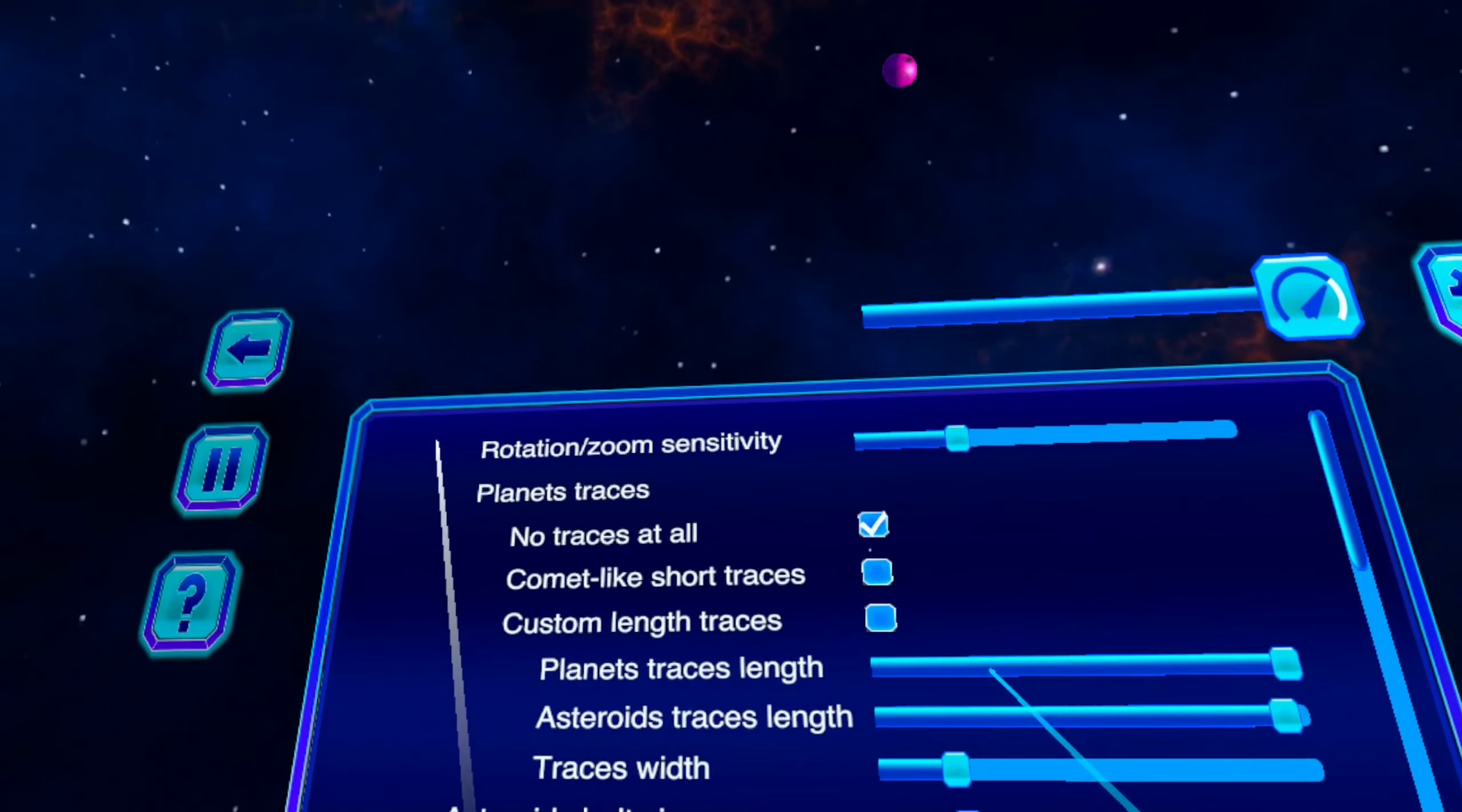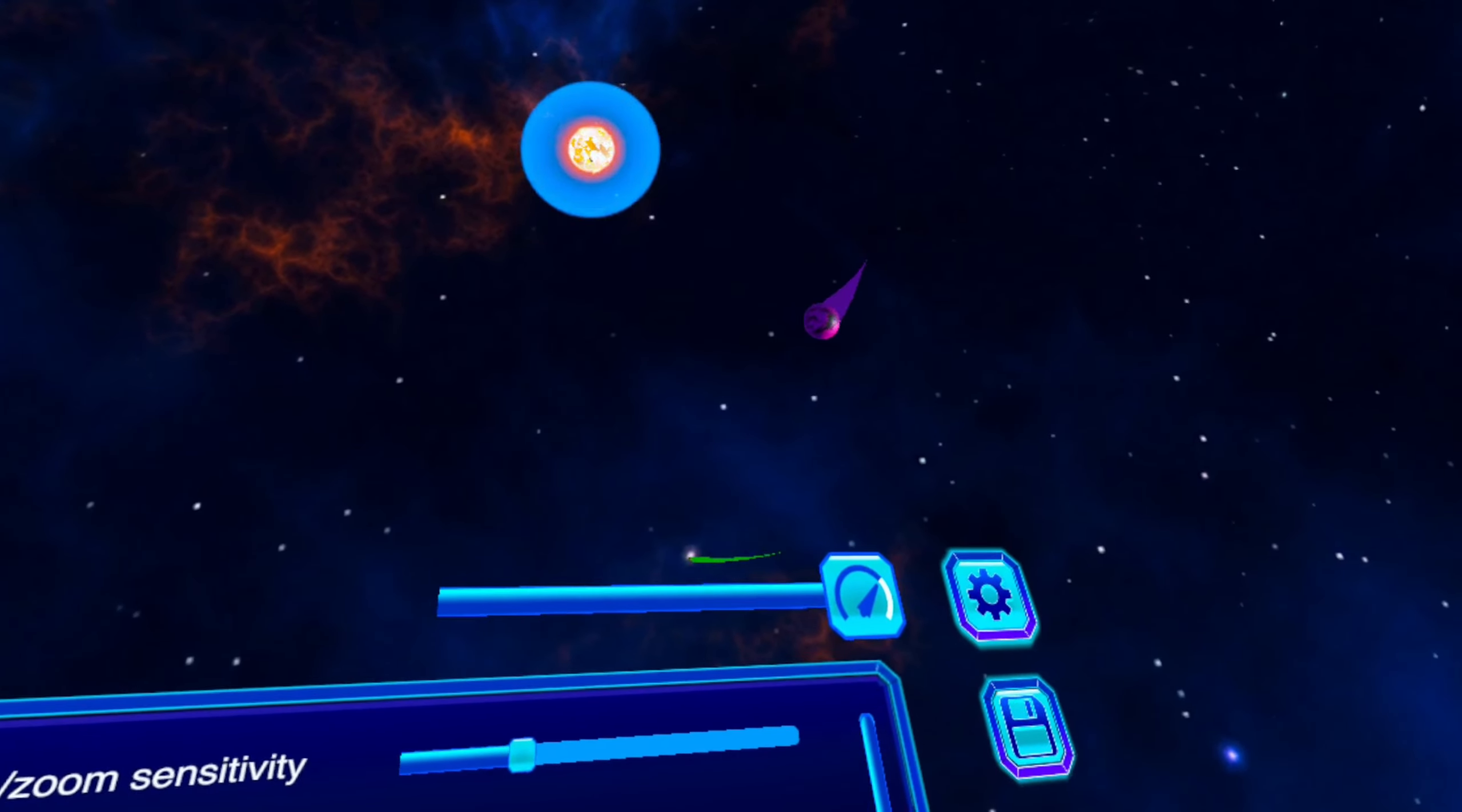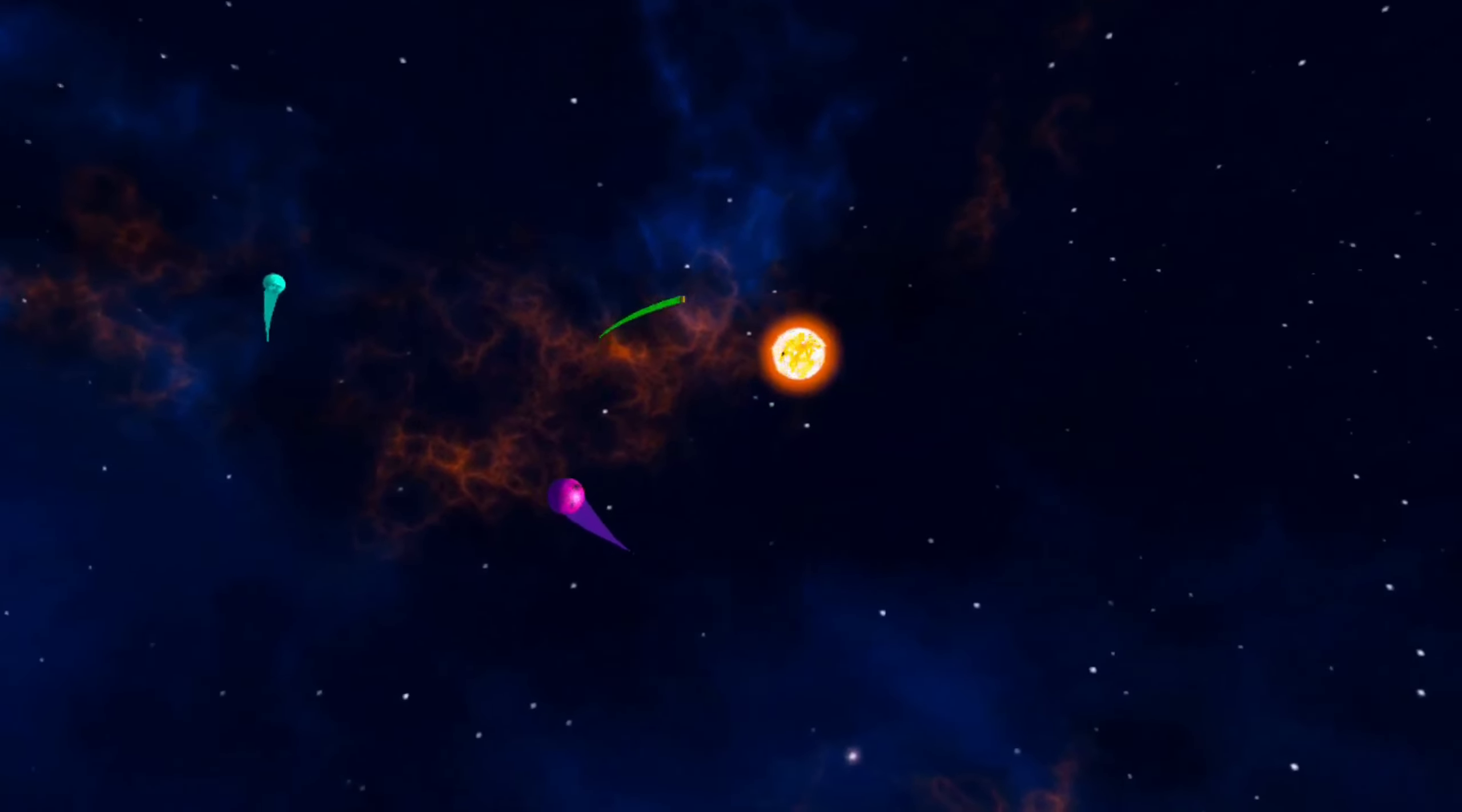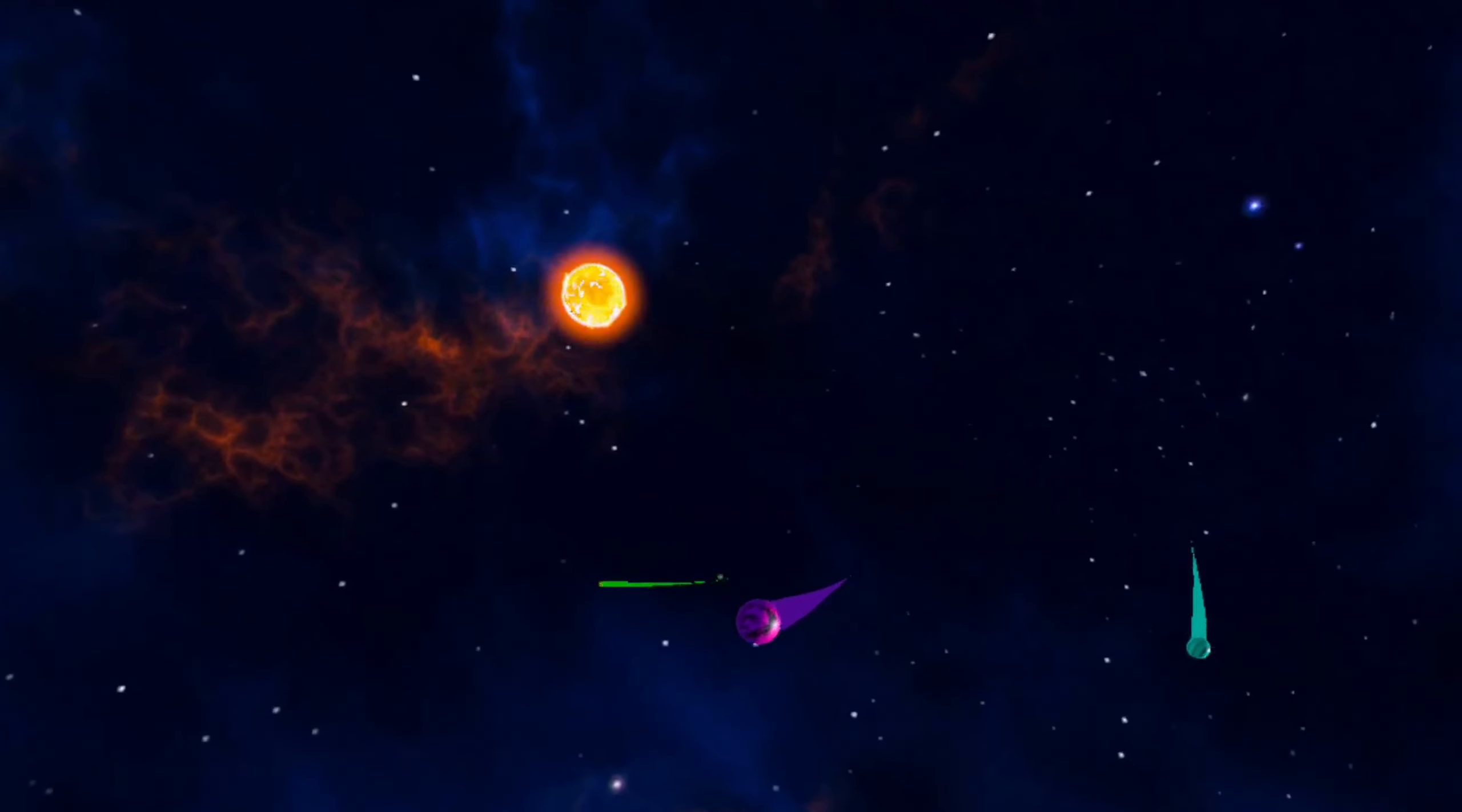And by the way, as I mentioned, if you don't like the traces, you can change it with no tracing at all. You can just use small traces that follow the planets. This is also nice if you don't want to see all these lines. And again, this happens all the time around us. Amazing.